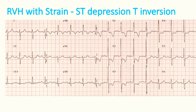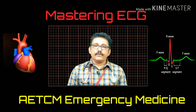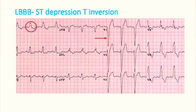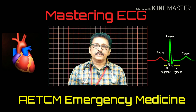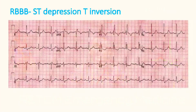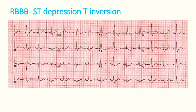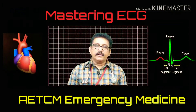In left bundle branch block, you can also see ST depression and T-wave inversion. In V4, V5, V6 you can see a wide QRS complex with an M-pattern, then ST depression, then T-wave inversion. T-wave inversions are seen in V5 and V6 in left bundle branch block. RBBB also can produce ST depression and T-wave inversion — in this ECG you can see the RSR' pattern in V1, V2, V3, and in V1 and V2 there is ST depression and T-wave inversion.